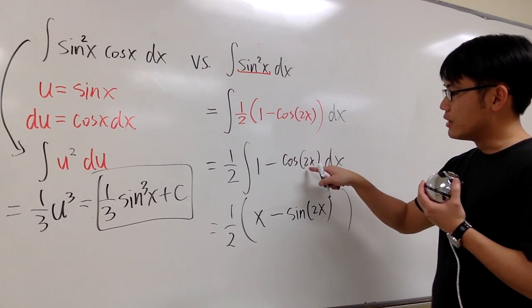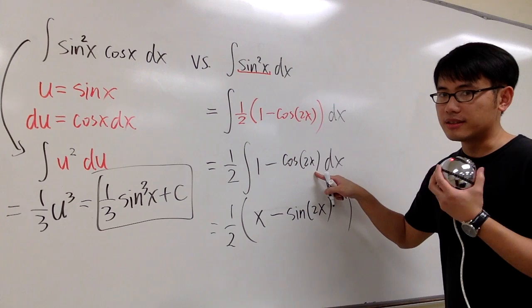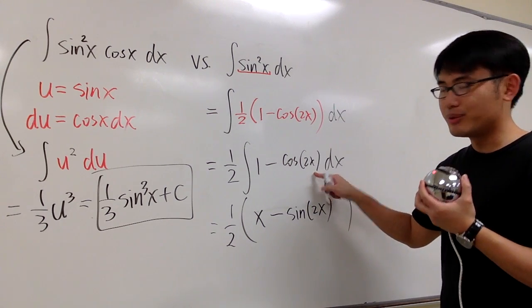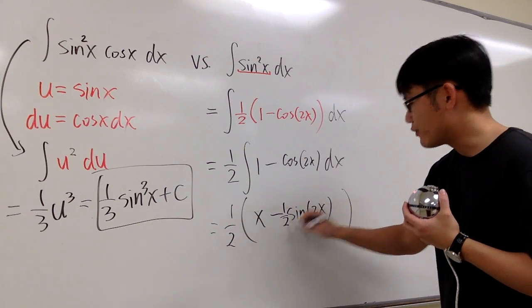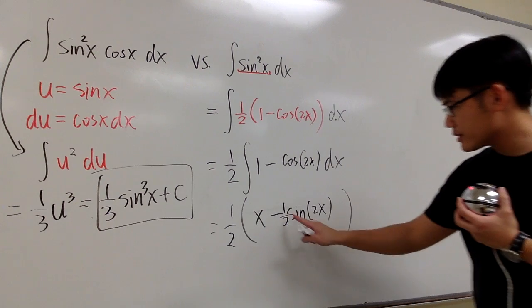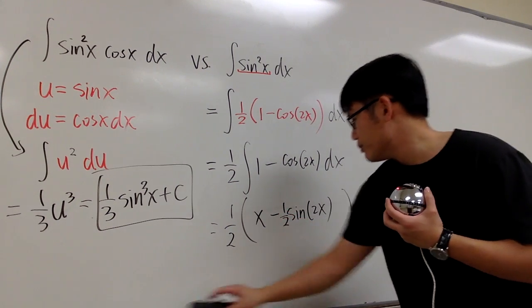But then since the inside is 2x, the derivative of 2x is 2. We will have to divide it by 2. Let me put down the 1 half right here, right in front. And that's pretty much all.